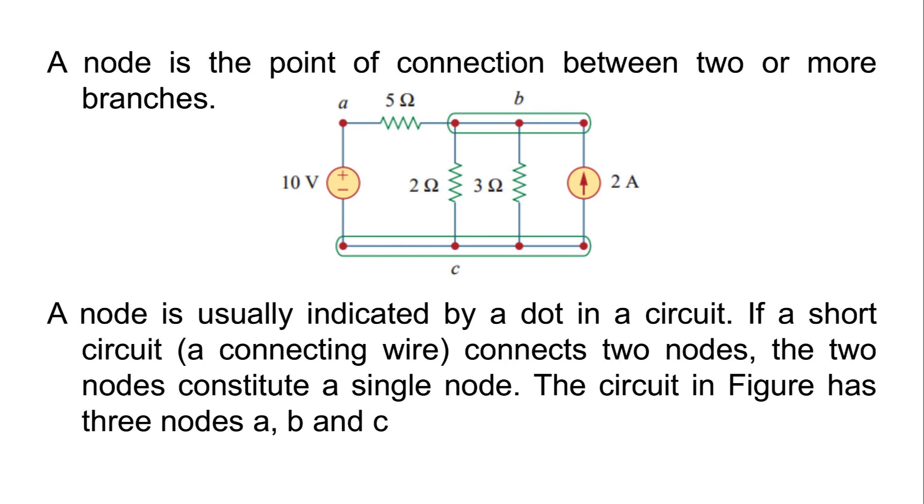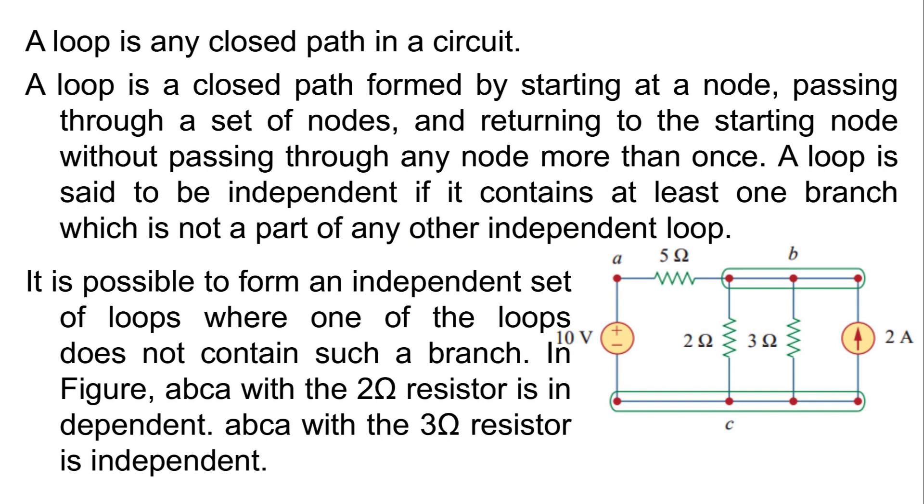A loop is any closed path in a circuit, passing through a set of nodes and returning to the starting node without passing through any node more than once. A loop is said to be independent if it contains at least one branch which is not a part of any other independent loop. It is possible to form an independent set of loops where one of the loops does not contain such a branch.